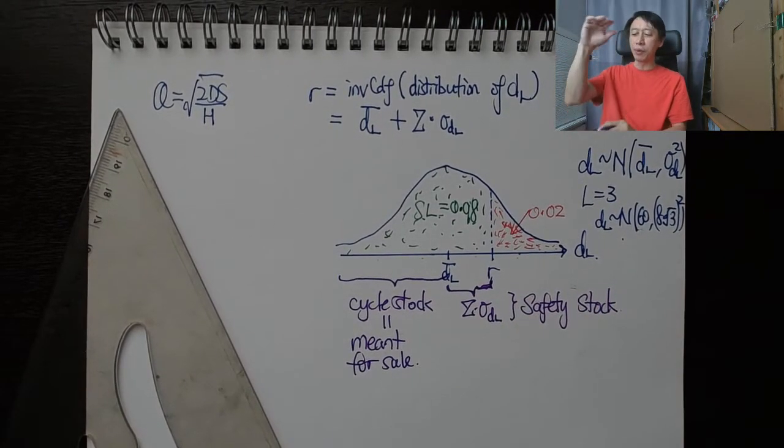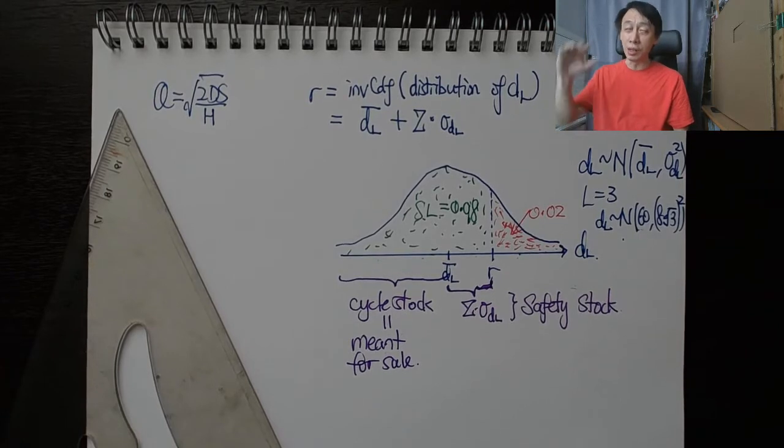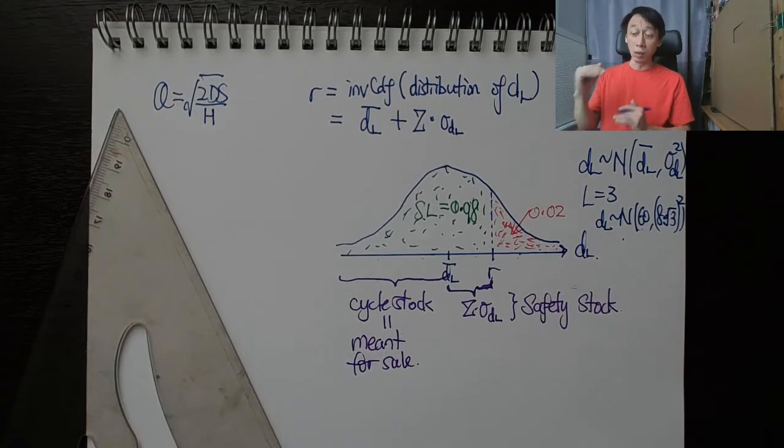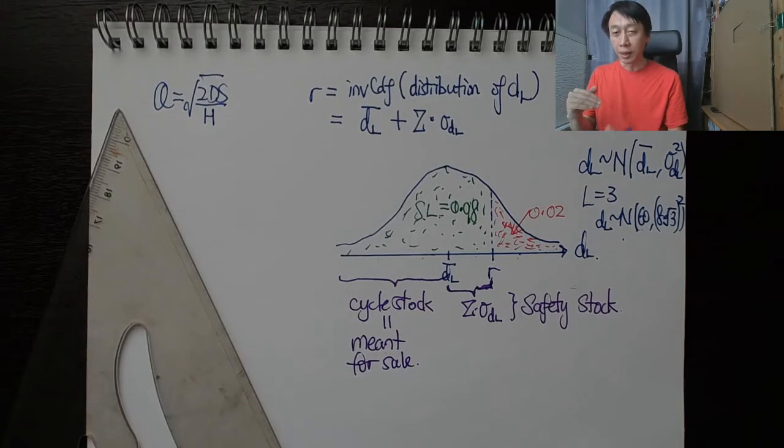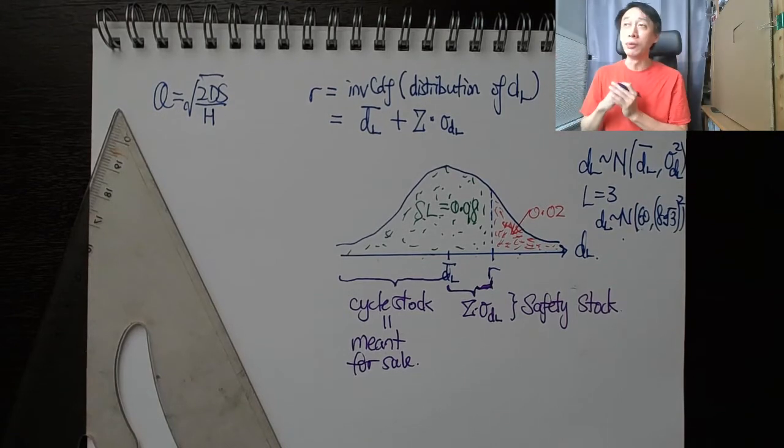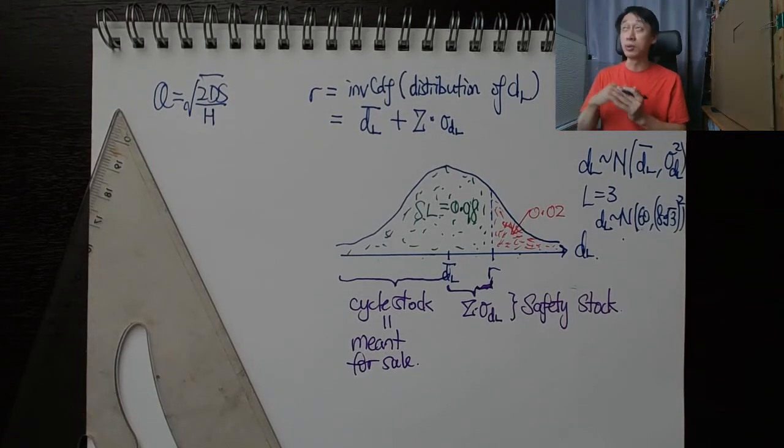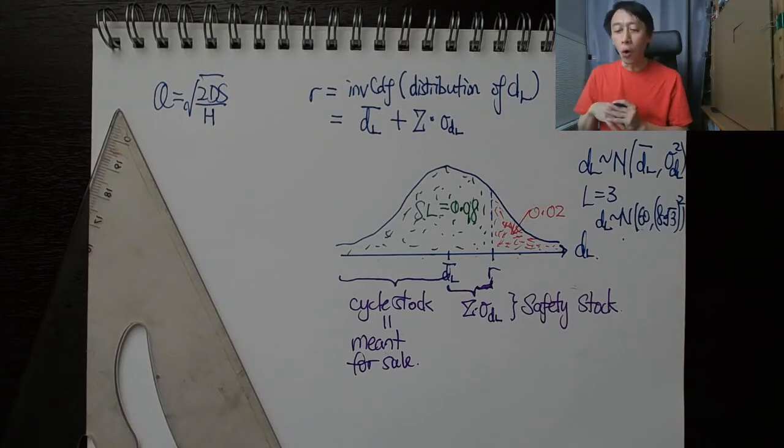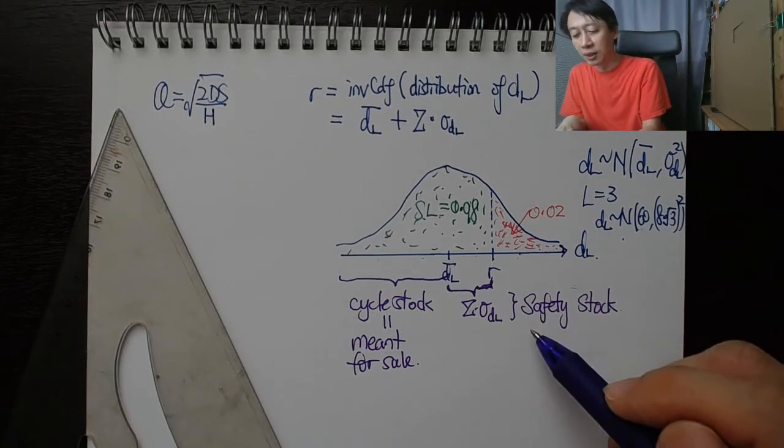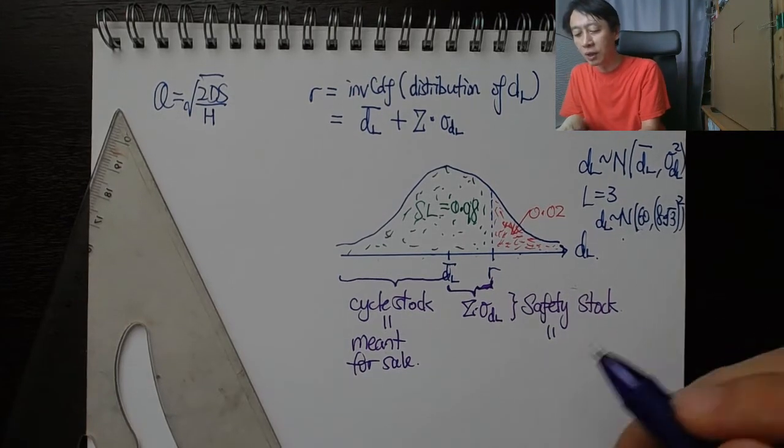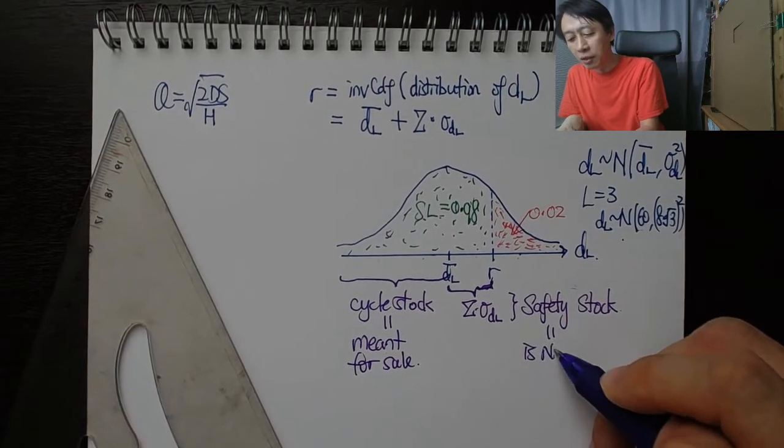We have that portion in our inventory for the total of reorder point number of tires because we know that on average we can sell them. So that's meant for sale. And the boss asks, then what happens to the remaining 28 tires? That 28 tires is what we call safety stock and is not meant for sale.